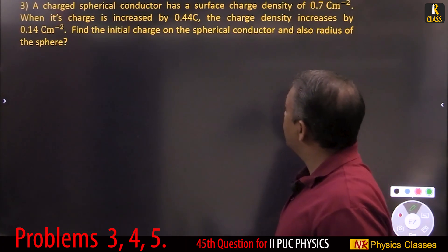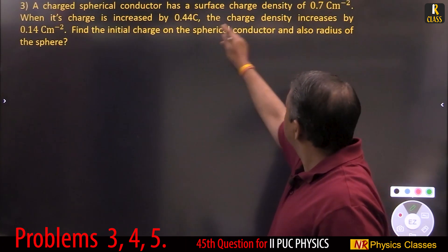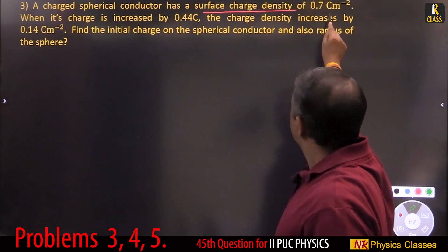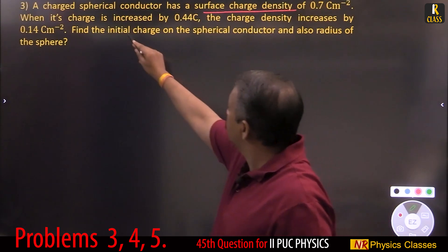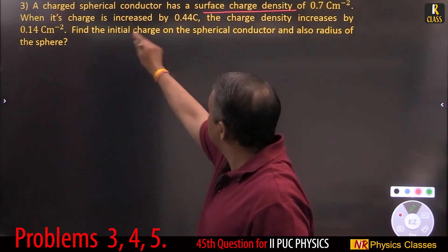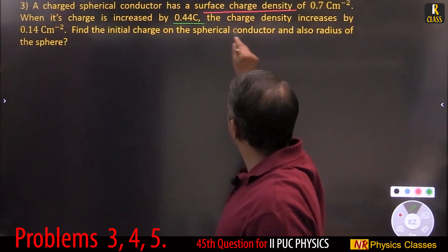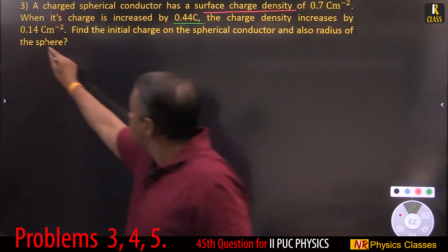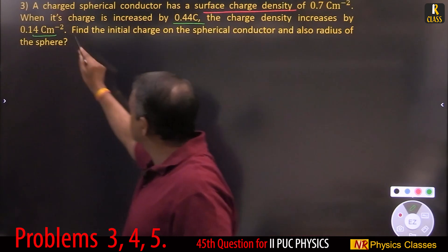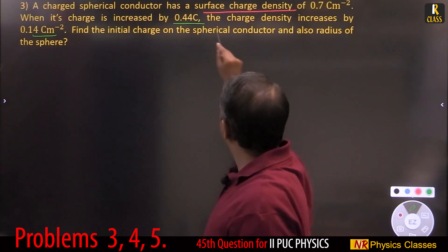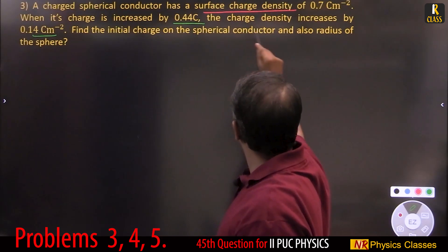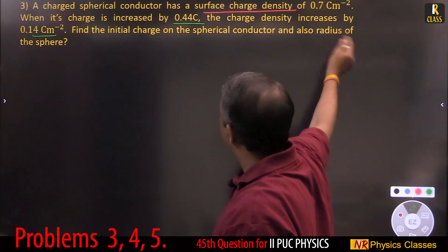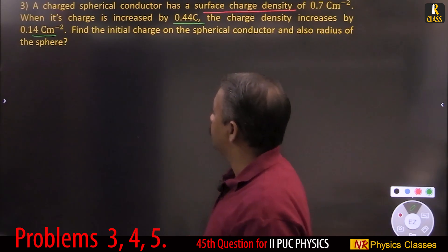A charged spherical conductor has a surface charge density. When its charge is increased by 0.44 C, the charge density increases by a given amount. Find the initial charge and the radius of the spherical conductor.